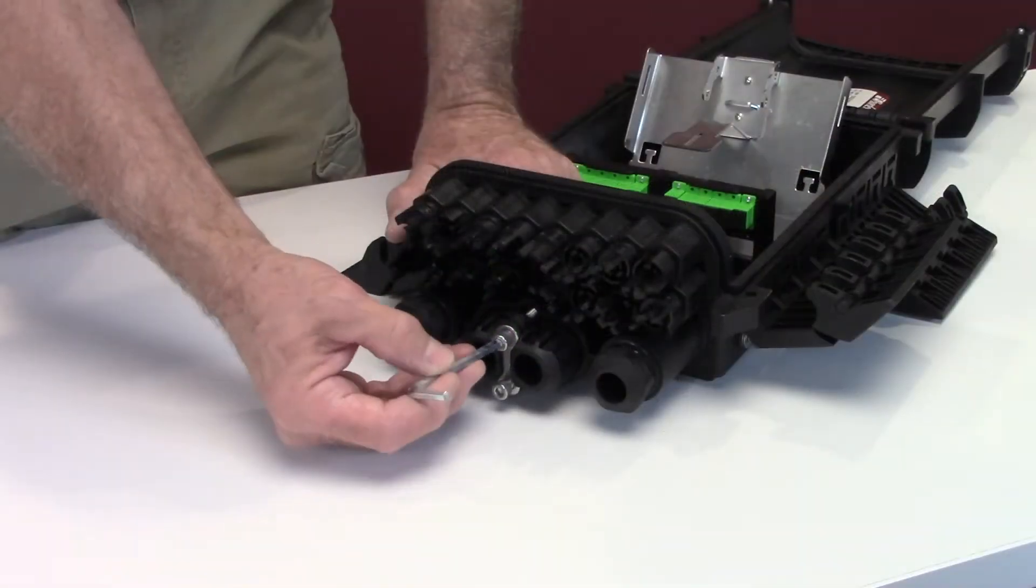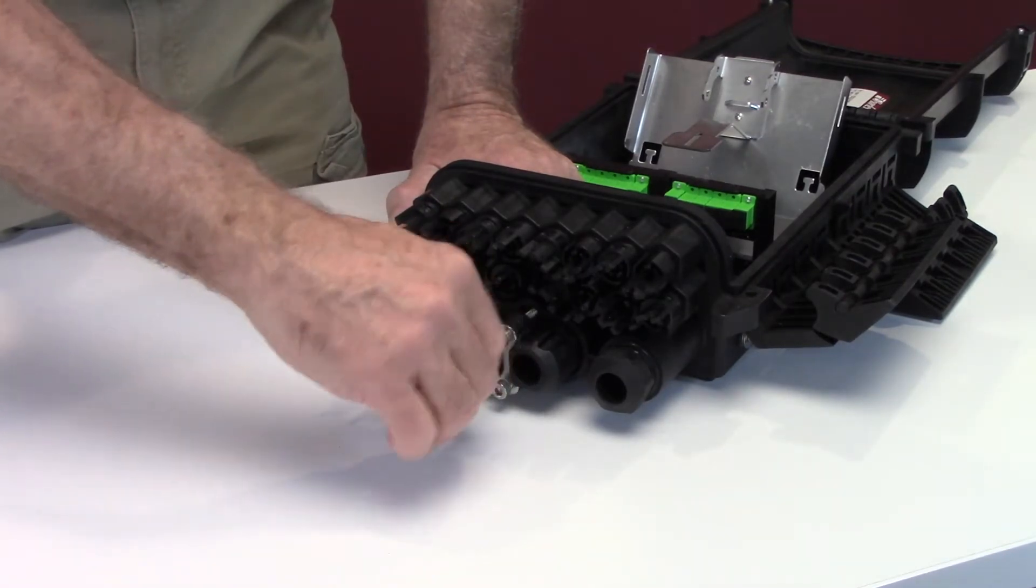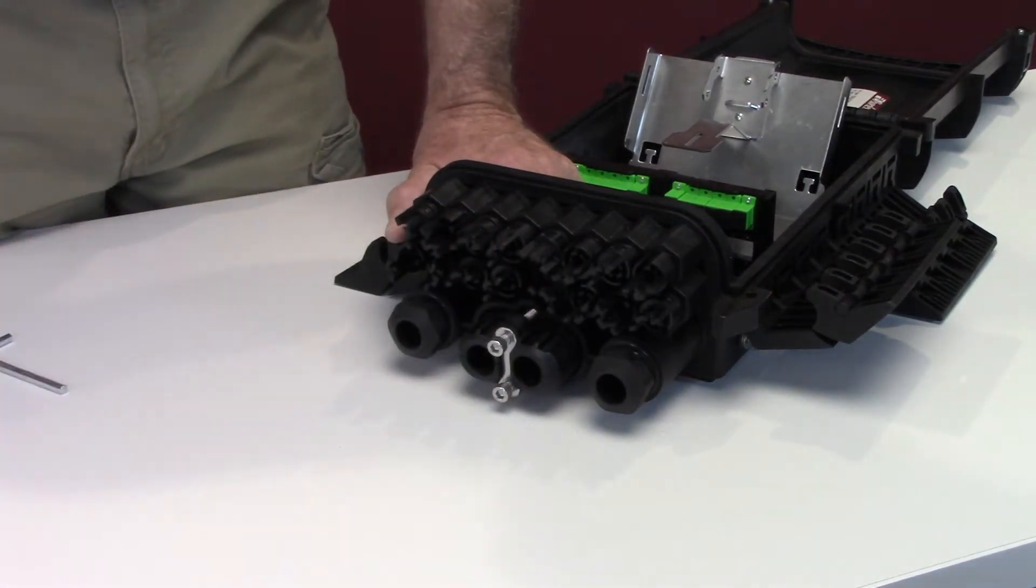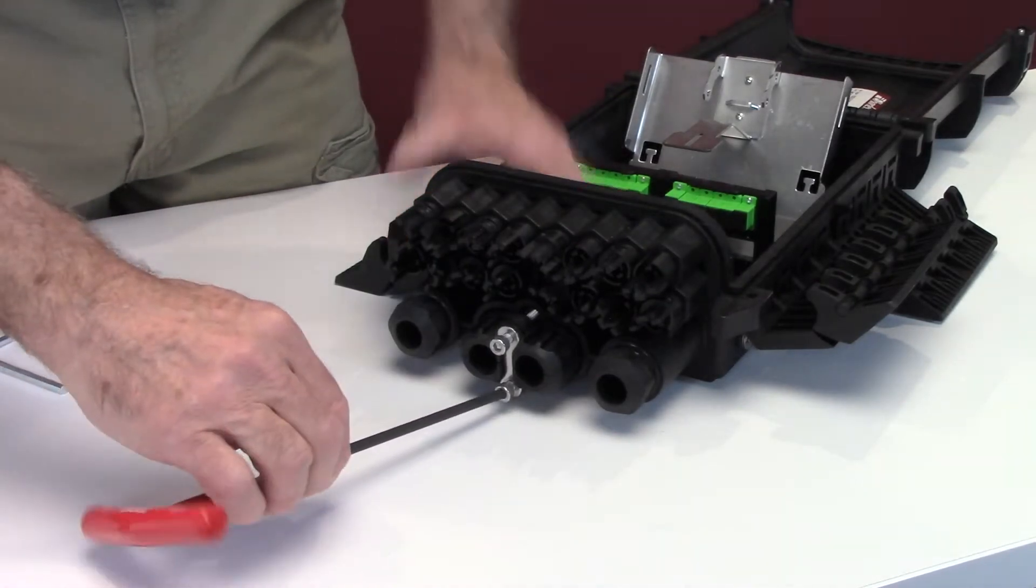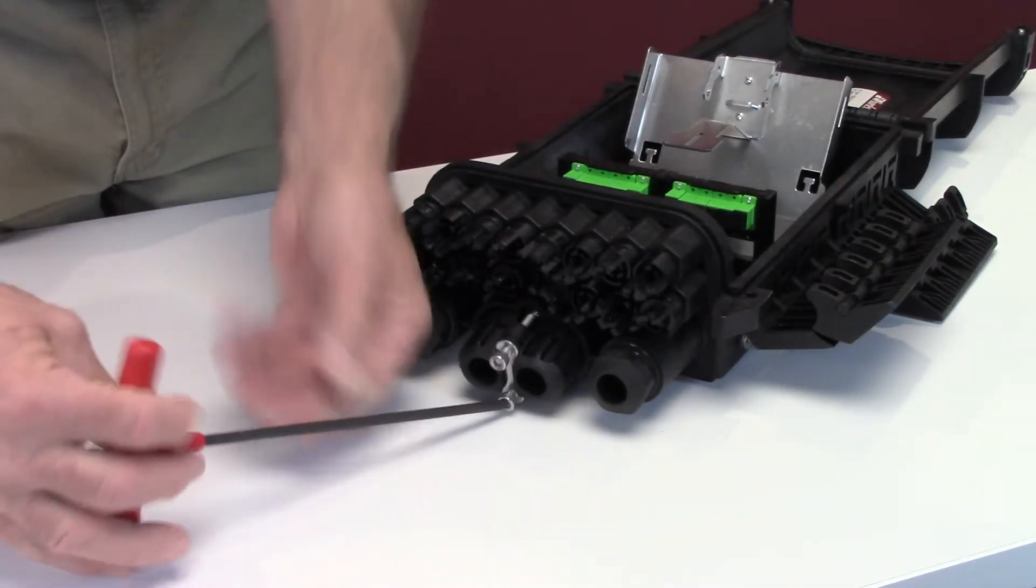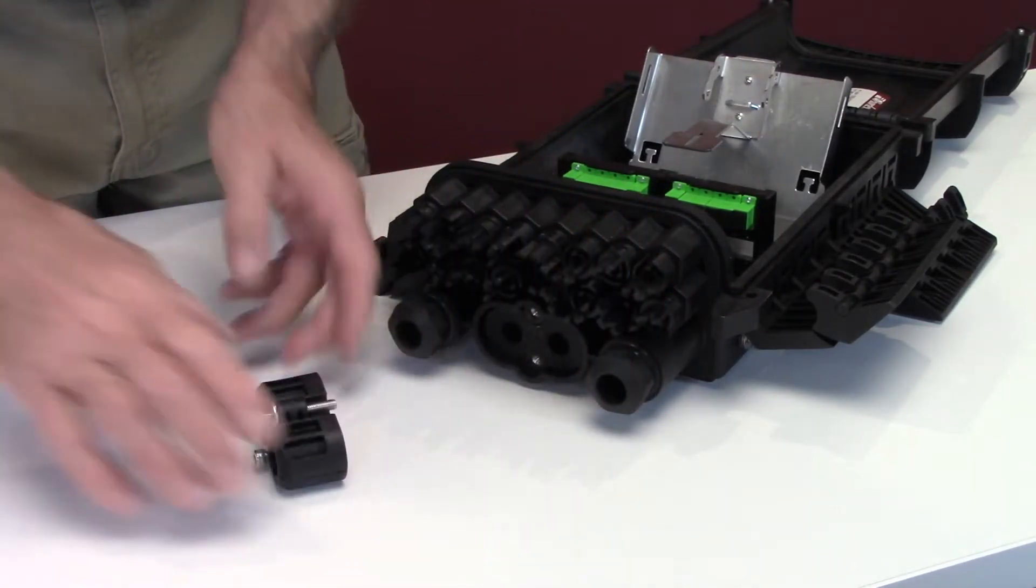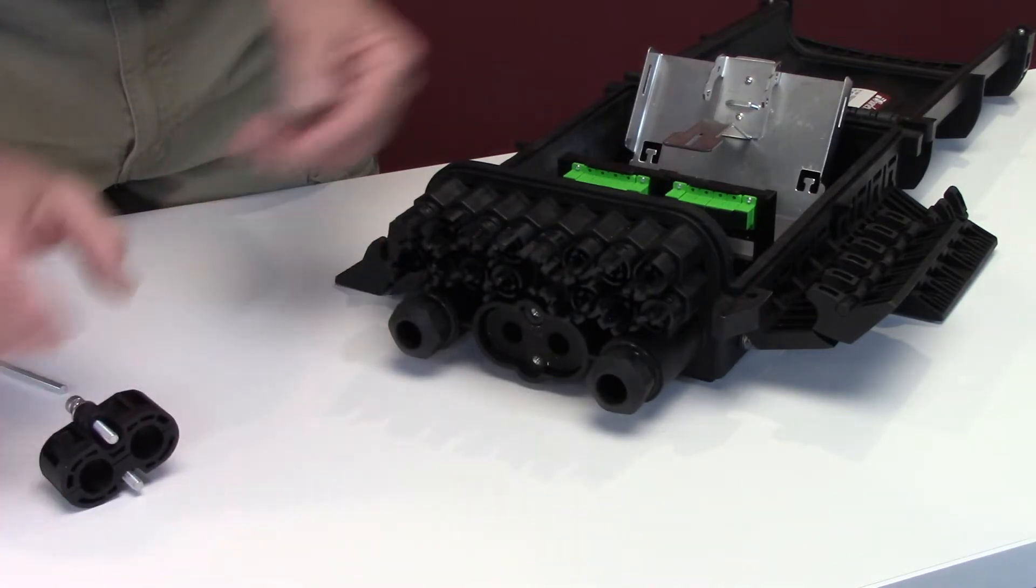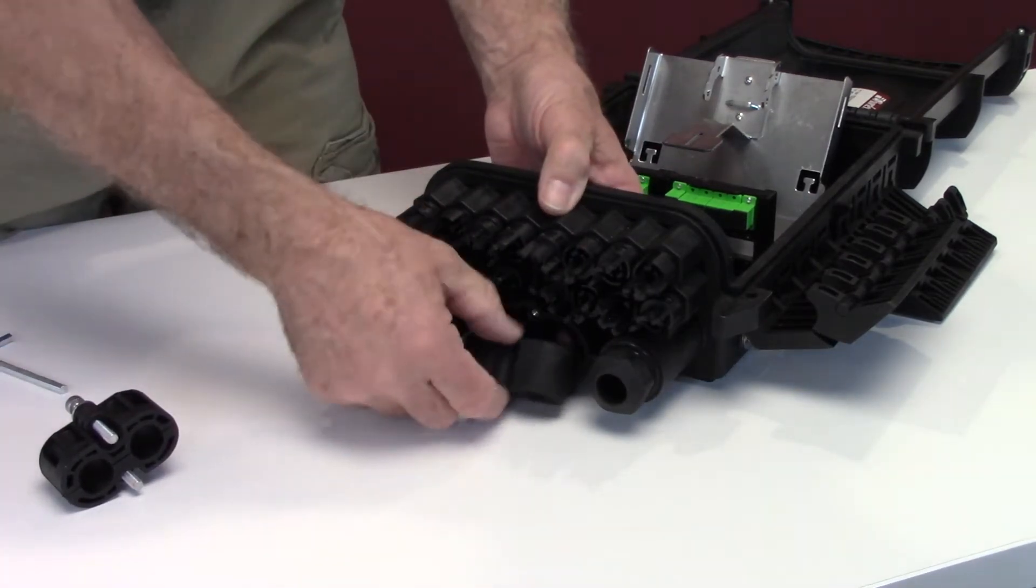Use the supplied five millimeter Allen wrench or a T-handled Allen wrench to loosen the express port sealing components. First the cable clamp, then the sealing grommet, finally the plastic inner grommet. A three sixteenths inch Allen wrench can be substituted for the five millimeter wrench.